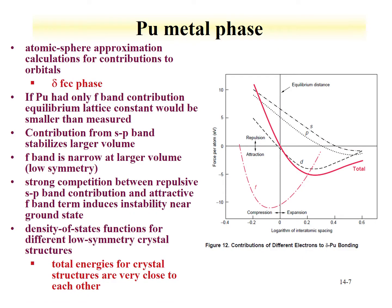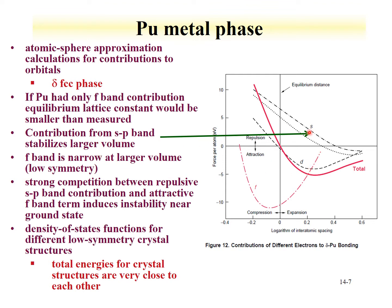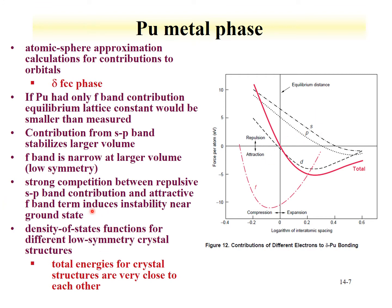An example of the mixing of different electron orbitals in delta plutonium, which has the FCC phase, is shown here. The total contribution is shown as a solid red line. If plutonium were only consistent with the F-electron band, the lattice constant would be smaller. The contribution from the S and P bands stabilizes larger volumes, and the F band is narrow at larger volumes. There is strong competition between repulsive S and P band contributions and attractive F band contributions.